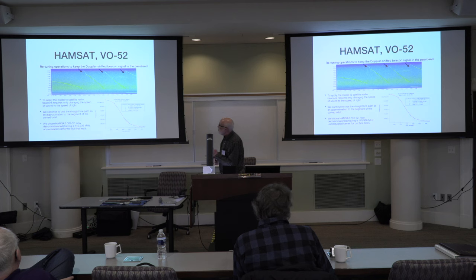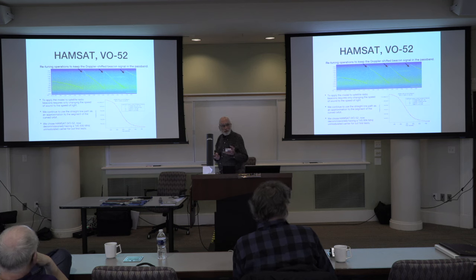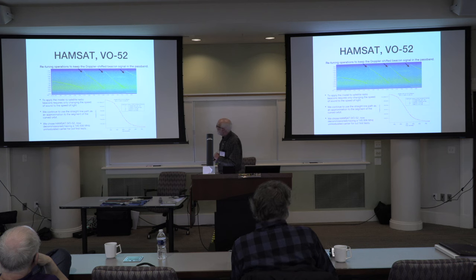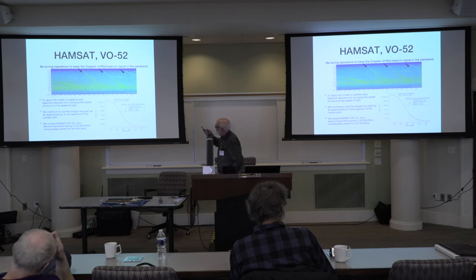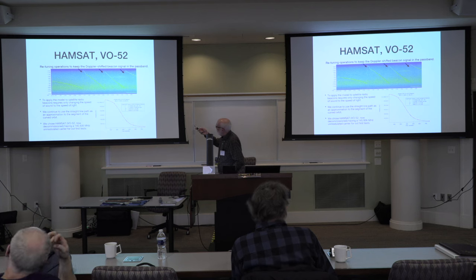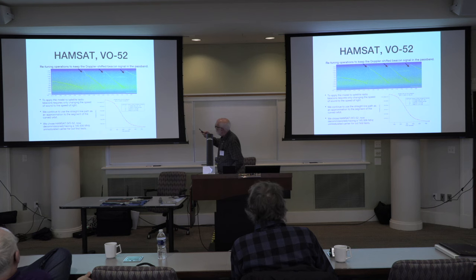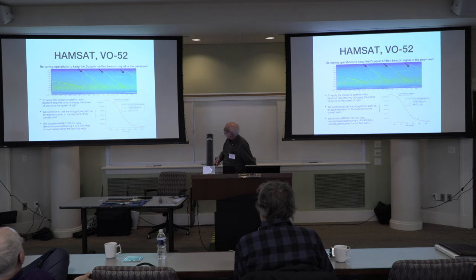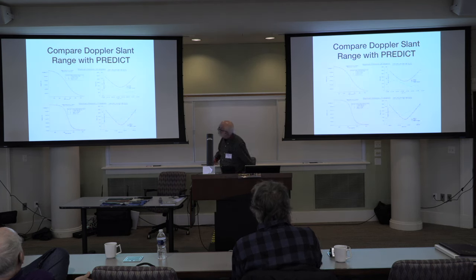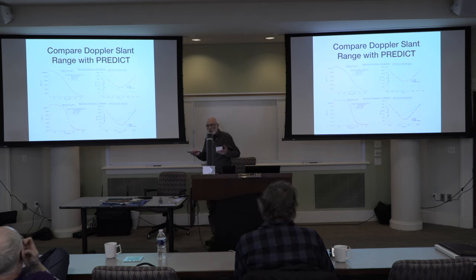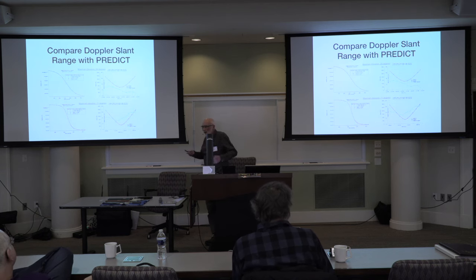The only change I made to my model was to put in the speed of light in place of the speed of sound. We kept the straight-line approximation to the segment of the orbit. The frequency was right on, and the velocity was, I think, pretty close. I went ahead and worked backwards and forwards to estimate the slant range based on the velocity, using the straight-line path again.